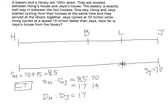The distance should also be 17 to 14 units, which means from Hong's house to the library is 17 units, and from JS's house to the library is 14 units. We also know from the question that the library and the bakery are 120 meters apart.